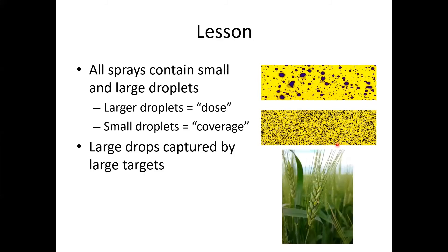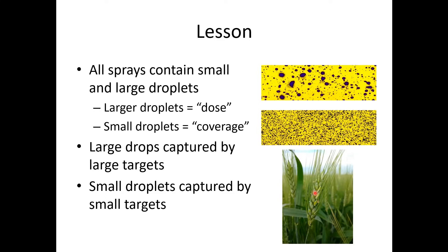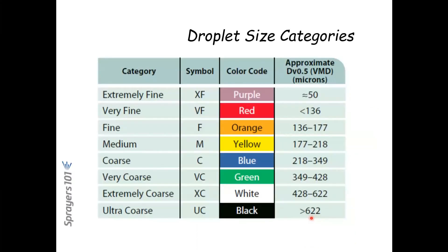Typically, large drops are captured by large targets — the wheat head, floret, and glume are considered large targets in the spray world, much bigger than say a cotyledon. An awn is a small, vertical target that captures small droplets. Even in a mixed spray at a wheat head, you get some partitioning — you won't find large droplets on the awns, but you will find them on the wheat head itself. The industry represents spray qualities with a color-coded system and qualitative descriptors: medium, coarse, very coarse, extremely coarse.